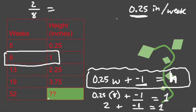0.25 W plus negative 1 equals H. I'm going to double check that it works with another piece of this. Make sure that I'm correct. 0.25 times 19 would be 4.75 minus 1, 3.75. So this formula works with my table. Now I can use it with 52 weeks to find this answer. 0.25 times 52 is 13 minus 1, 12. We expect this plant to be a foot tall, 12 inches tall after one year.